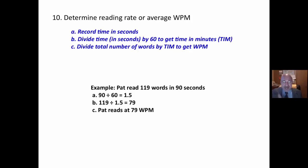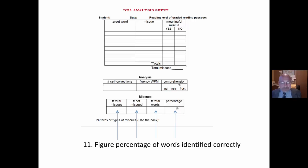I then determine the reading rate or average. I have the passage recorded. So I go back and I time it the second time. I record the time in seconds. I divide the time in seconds by 60 to give me a time in minutes. And then I divide the total number of words by the time in minutes to get words per minute. Example. Pat read 19 words in 90 seconds. 90 divided by 60 is 1.5, 1.5 minutes. 19 divided by 1.5 equals 79. So Pat reads 79 words per minute. That's words per minute. And you can see me record fluency right there.